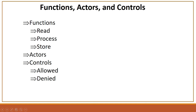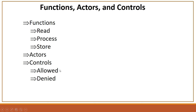Functions, actors, and controls: the different functions are read, process, and store. Actors can be a person, application, system, or process — not everyone can access the information. Controls define the possible actions on any information repository — those possible actions can be allowed or denied.